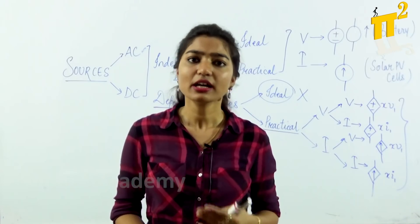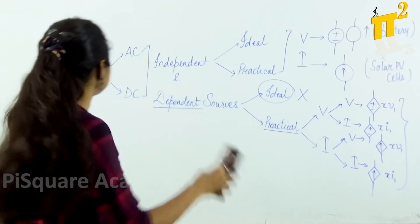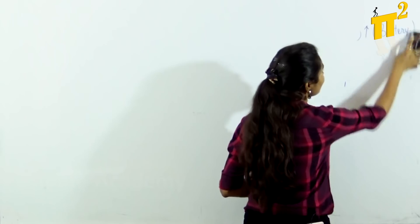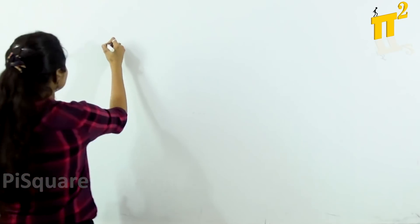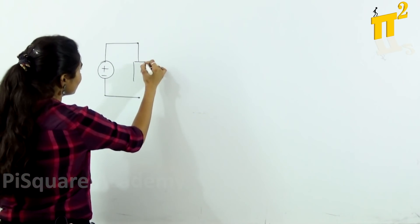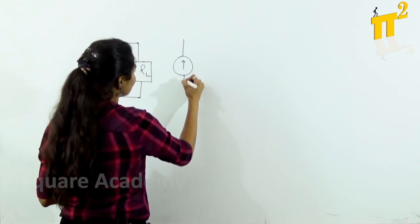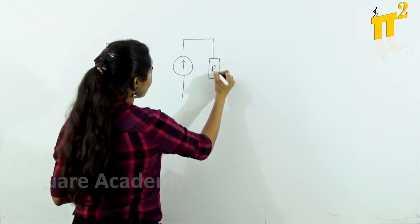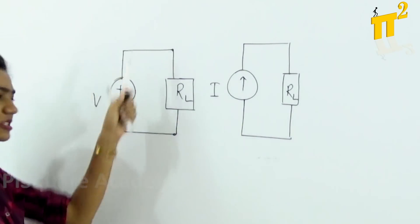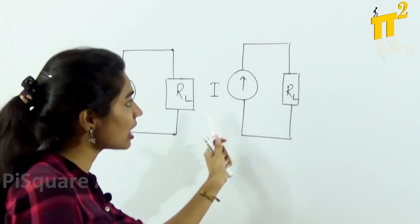Now let's get back to the main question: why are dependent sources not deactivated? Before answering that, we will first see how we deactivate an independent source, and then relate that to why we do not deactivate a dependent source. Here we have a voltage source supplying a load resistor RL, and a current source supplying a load resistor RL.